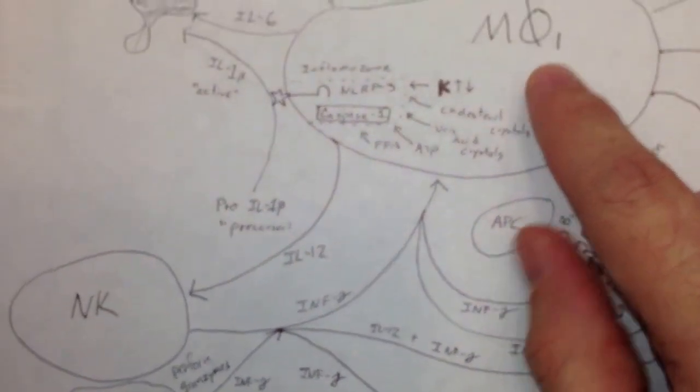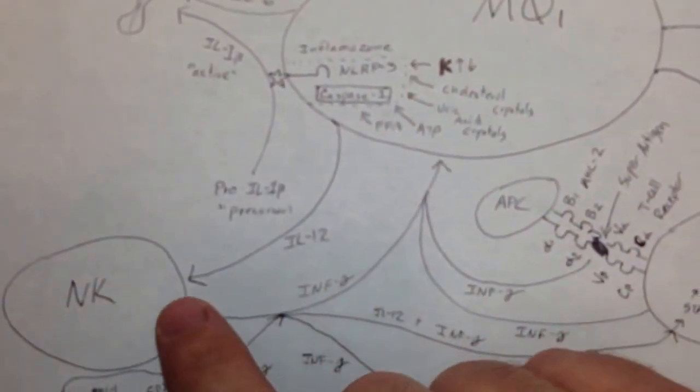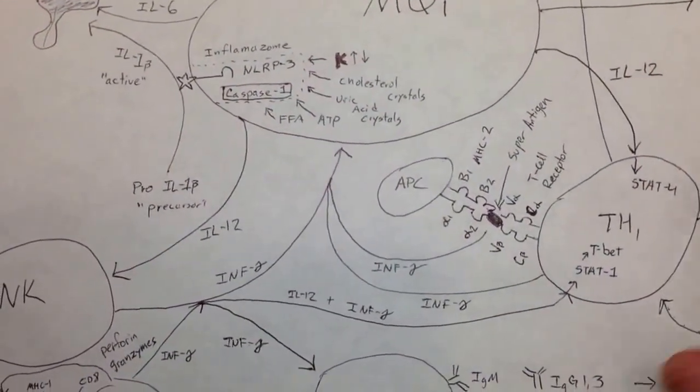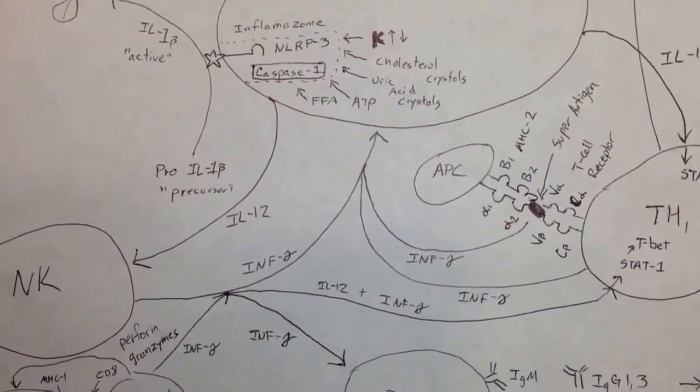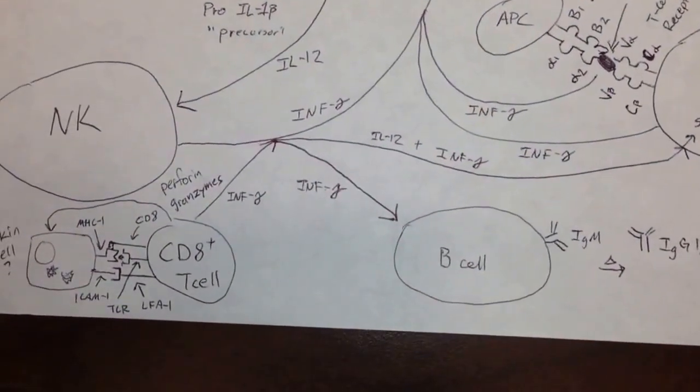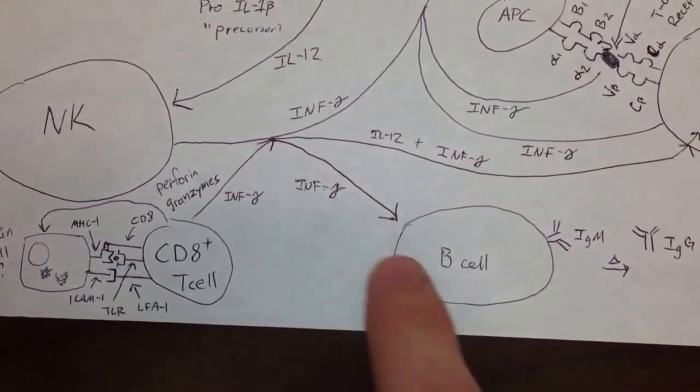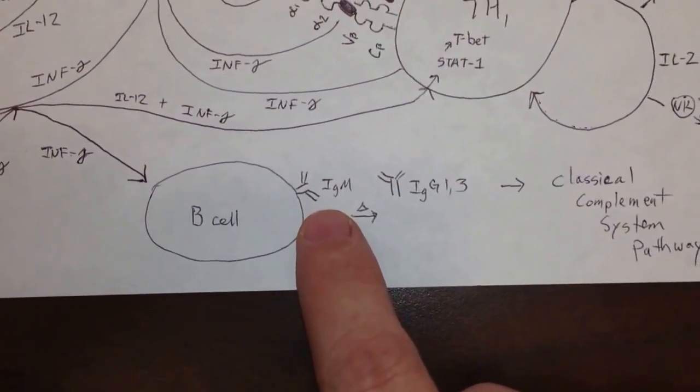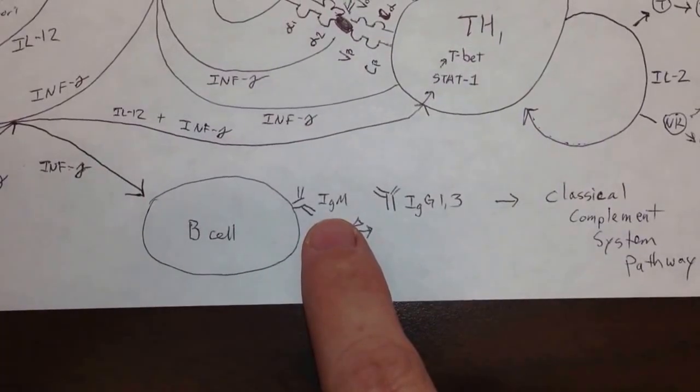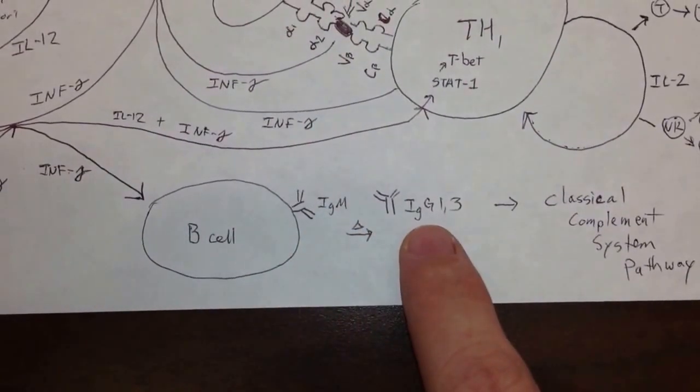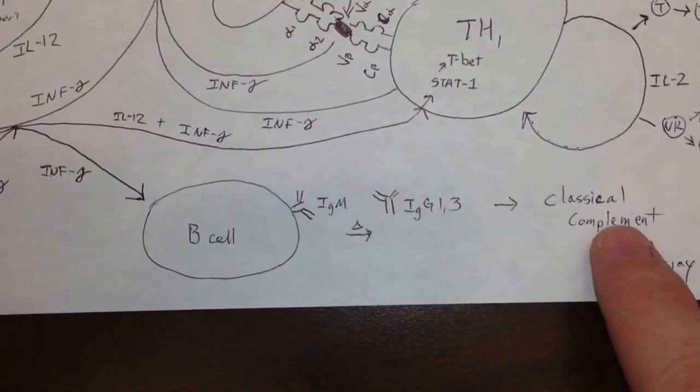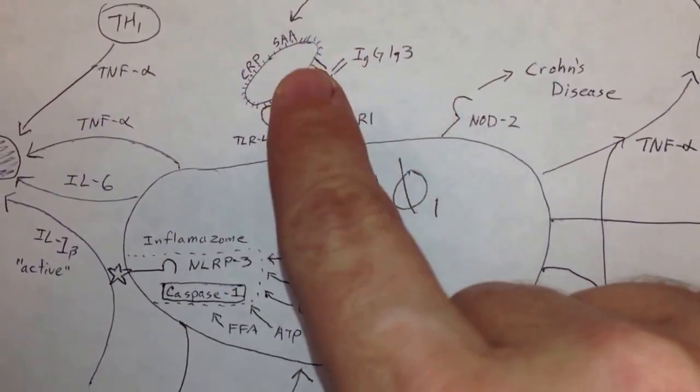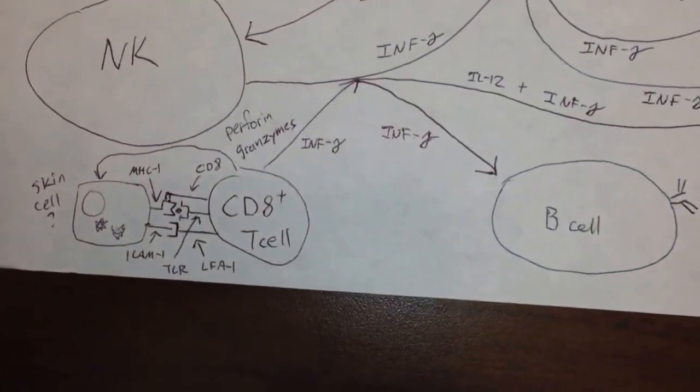And the type 1 macrophage also likes to secrete interleukin-12 over to the natural killer cell, just like it was secreting it to the T helper cell. So when it secretes it, it goes everywhere. It doesn't just send it to one cell, but these are some of the cells that like to pick it up. We can also see that some of this interferon gamma is going down to the B cell, which we mentioned earlier. And the B cell, when it receives that, is going to do a heavy chain class switch. And instead of making IgM, it's going to make IgG1 and IgG3, which will go and help the classical complement system pathway. And up here, we saw IgG1 and IgG3 bound to a bacteria. So it's working. Great. We're very happy to see that.